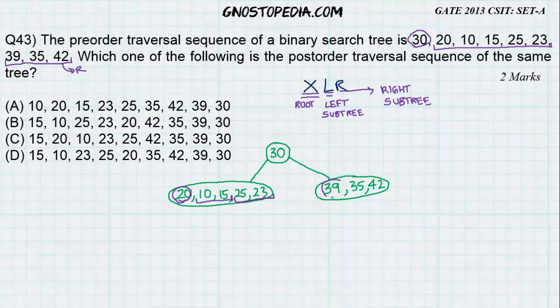Similarly, 39 will be the root here and will it have a left subtree? Yes, 35 is the left subtree and 42 is the right subtree. So, redrawing it, I get.